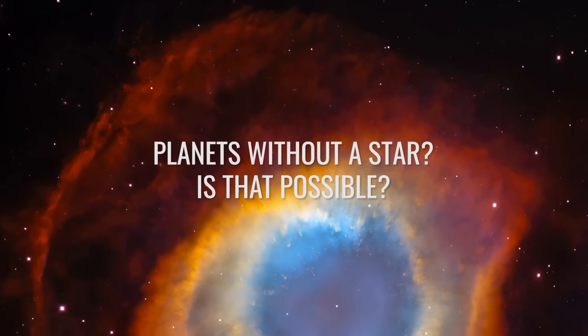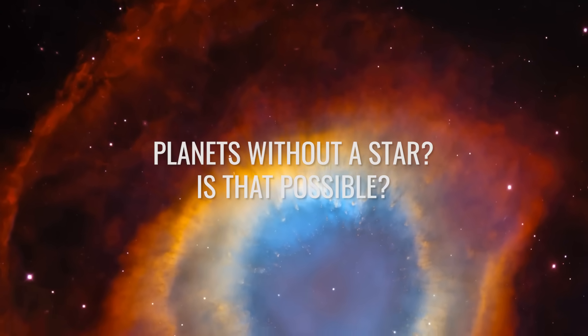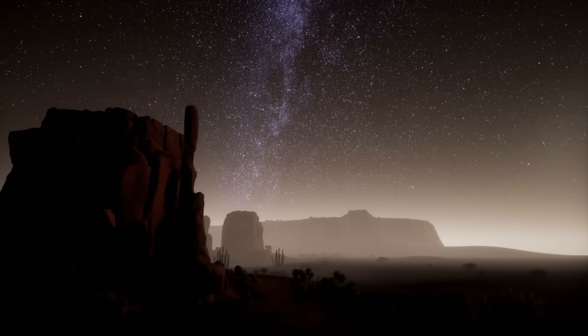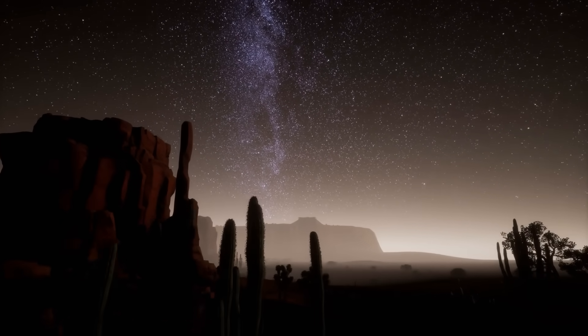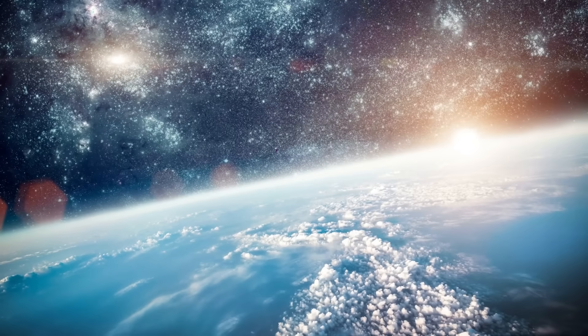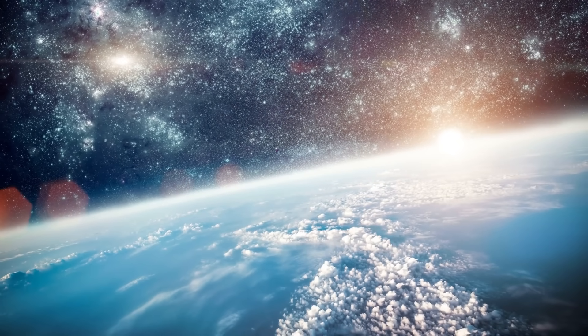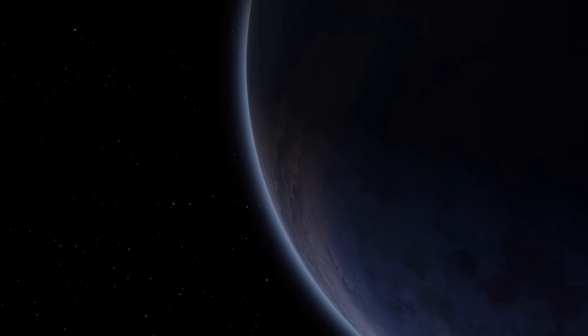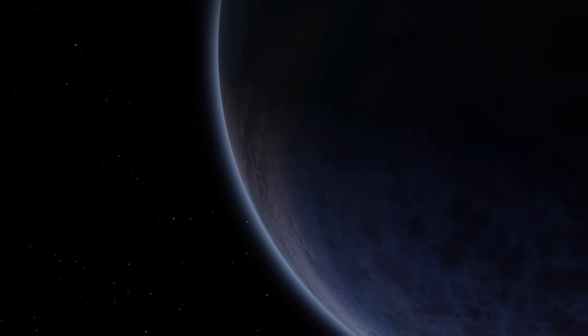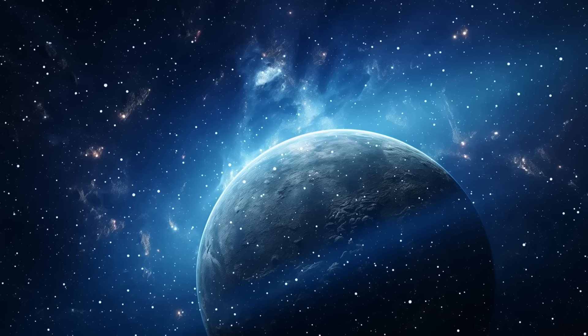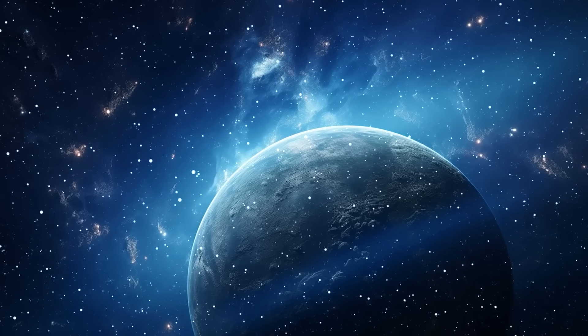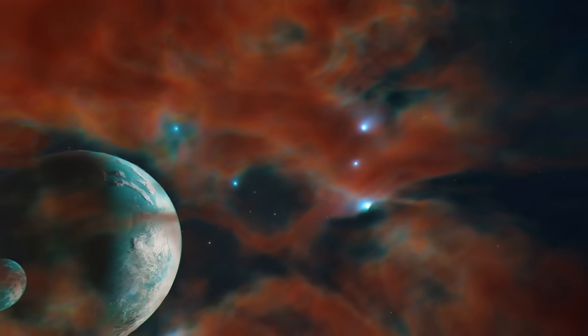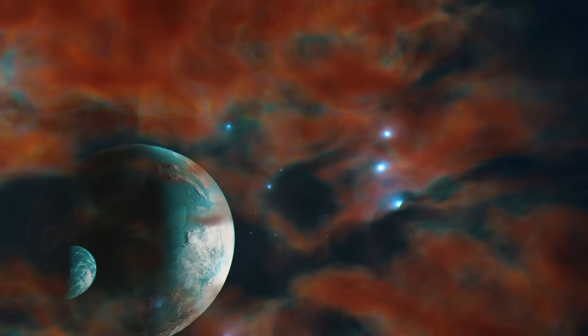Planets without a star? Is that possible? Would you have believed that there are planets without a star? Planets actually form in the dust and gas disks left over from the birth of stars. Then, they remain gravitationally bound to their star. At least, that's what you would think. However, vagabond planets show that this does not always have to be the case. Such planets are cosmic loners without a star that drift freely through space. But where do they come from and how can they survive in the hostile cold of space?